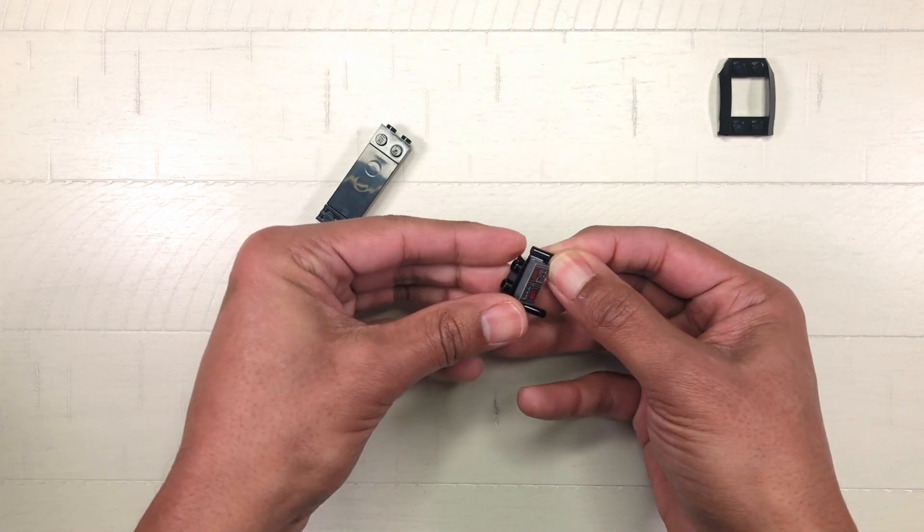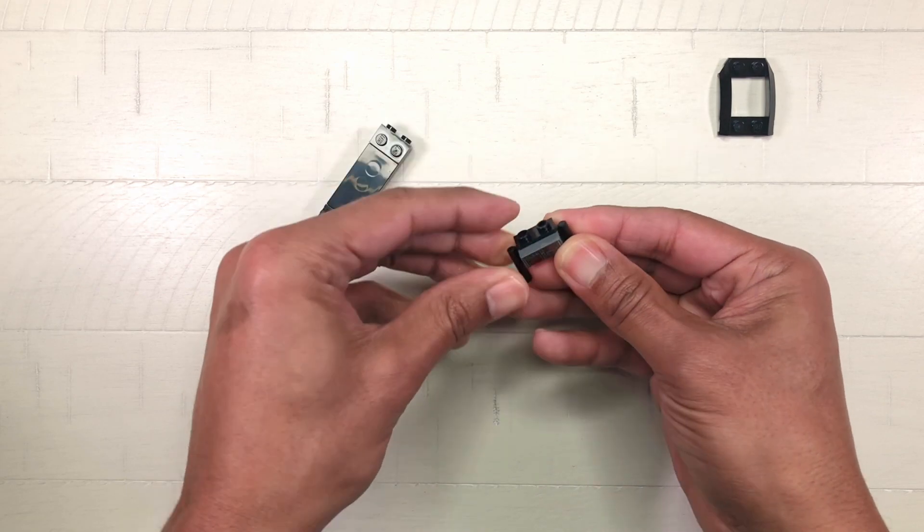Now place the one by two inverted bracket beneath the one by two plate with bar handles.